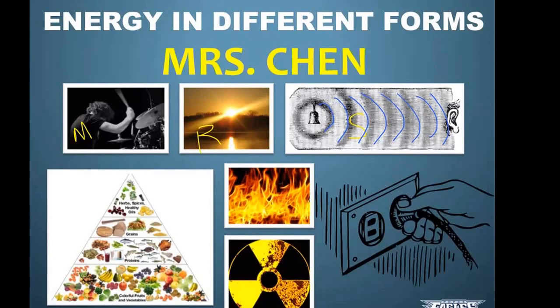Next up we have chemical energy. Chemical energy is energy that is stored in the bonds between atoms of compounds. All the energy we get from food — there's a ton of it — powers our bodies 24 hours a day. If you ever have a chance, YouTube 'gummy bear execution.' You'll get a sense of how much energy is in just one little gummy bear from a simple chemical reaction.